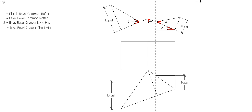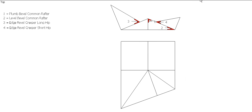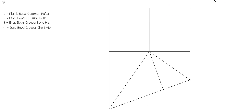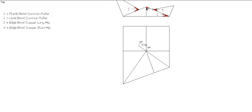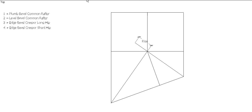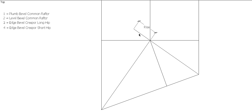Now we want to go down and do our hip bevels. I'm going to work on the long hip first. The first thing we need to do is come up the rise — so transfer the rise distance here, transfer that down onto our hip at 90 degrees, and then we join up the two points. So that gives us the true length of our hip here, and then that gives us our plumb bevel and our level bevel for our long hip.